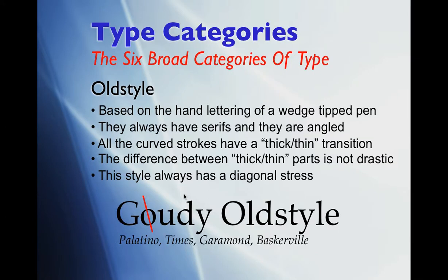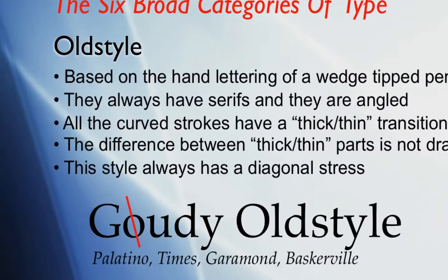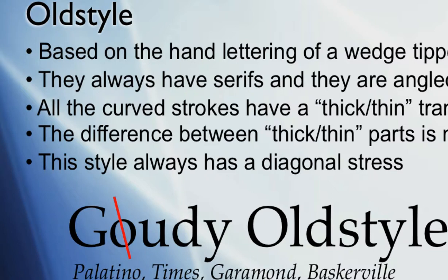All of the letters have thick and thin areas — what we call curved strokes all have a thick and thin transition. Very important, as you'll see compared to some of the other categories. The difference between the thickest parts and the thin parts is not very drastic, and that's very important because it makes the typeface very readable. Another part of the jargon with these fonts is the style always has a diagonal stress — notice that the thin parts of the letter are not straight up and down. It's like the letters are rolled over just slightly, and that's what we mean by diagonal stress.